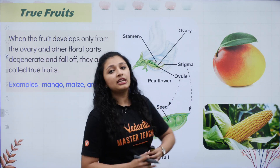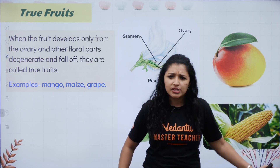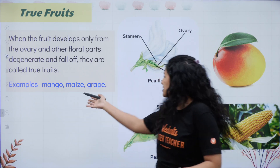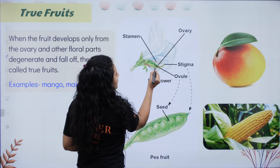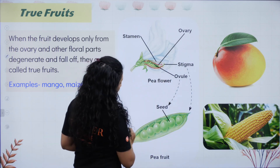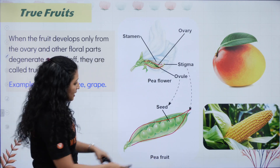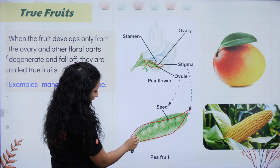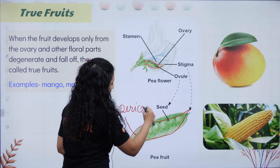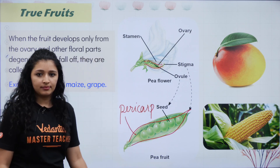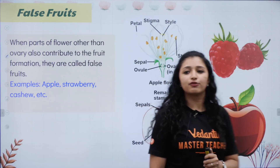When the ovary develops to form the fruit, we call these true fruits or normal fruits. Examples are mango, maize, and grape. In a true fruit, the ovary develops into the fruit — the pericarp is on the outside and the seed is inside. So what we see as a dry capsule-like fruit is the pericarp, and inside is the seed.